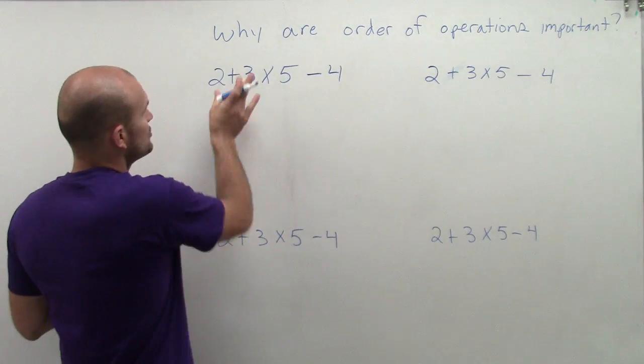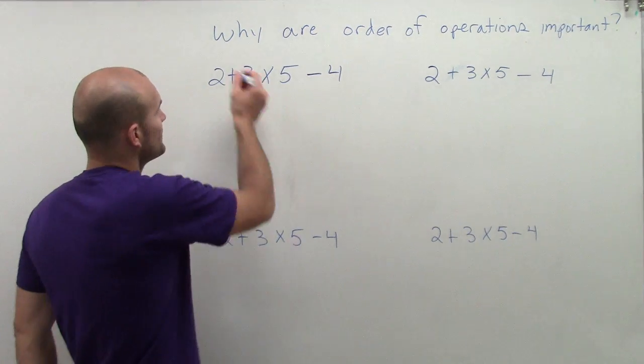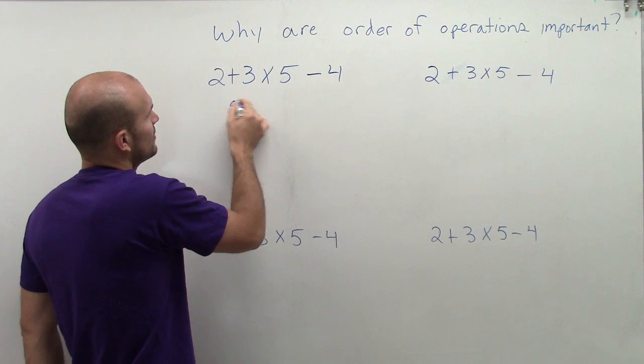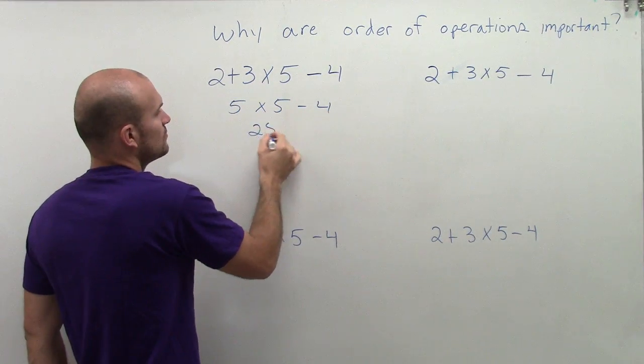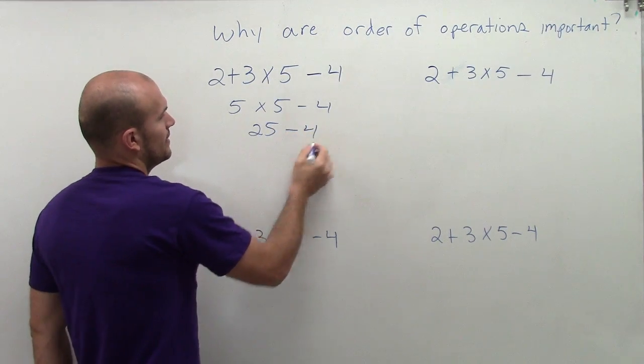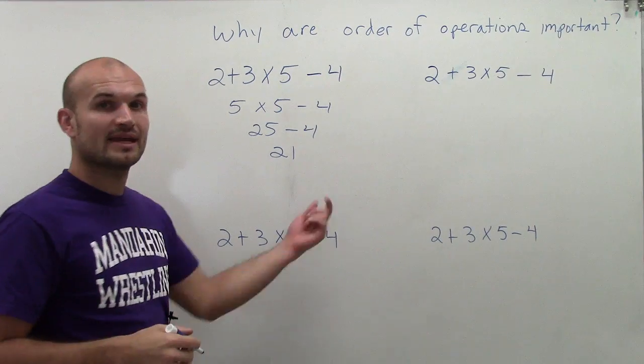Let's look at student number one. Student number one wants to say, 'Well, you know what, I'm just gonna work all the way from left to right and that's what I'm gonna do.' So they do 2 plus 3, which is 5, then they do 5 times 5, which is 25, then 25 minus 4, which is 21. So they get the answer of 21.